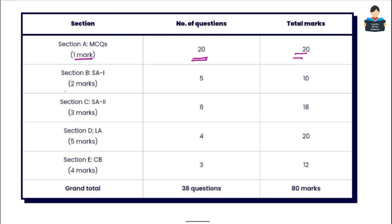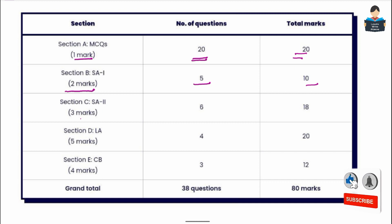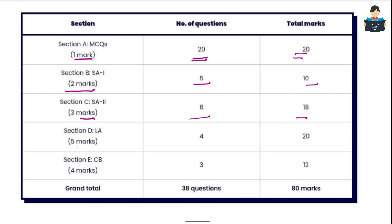The next type is 2-mark questions — 5 questions, 10 marks. Then 3-mark questions — 6 questions, 18 marks. So in this pattern you can write your pre-board.